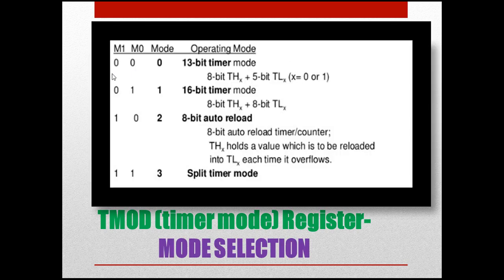In the mode selection, we select the timer mode using M0 and M1. We have 4 modes: mode 0, mode 1, mode 2, and mode 3 — using the combinations of M1 and M0 bits (00, 01, 10, 11).